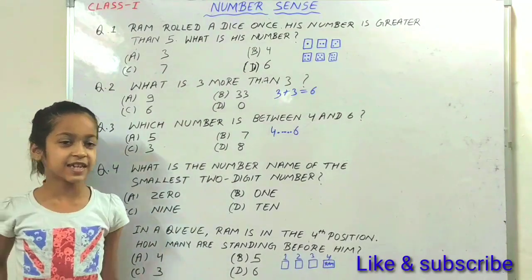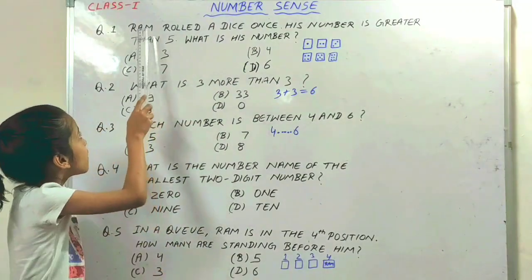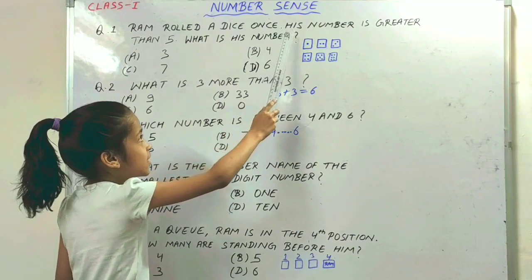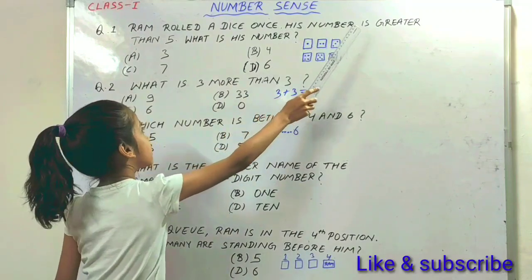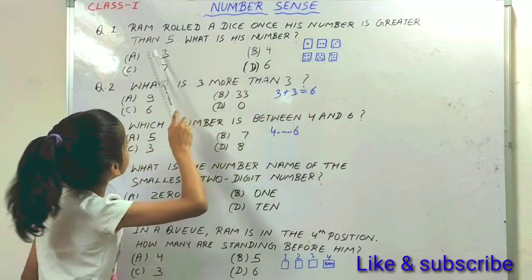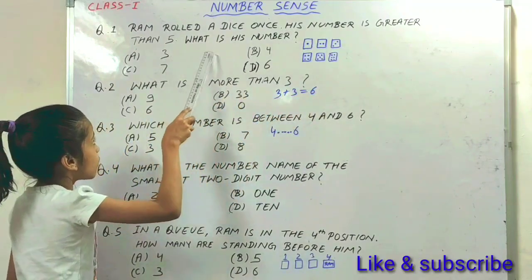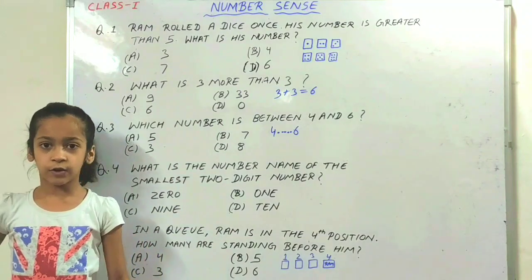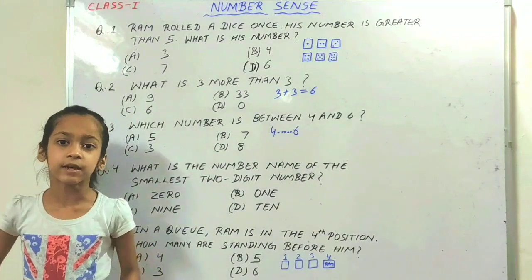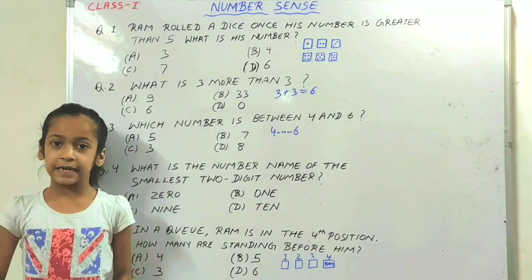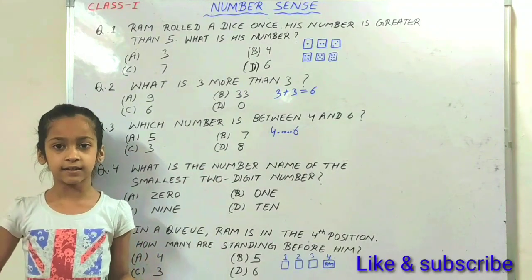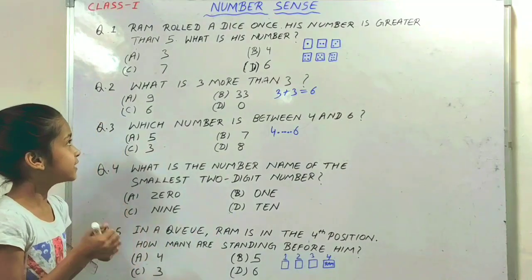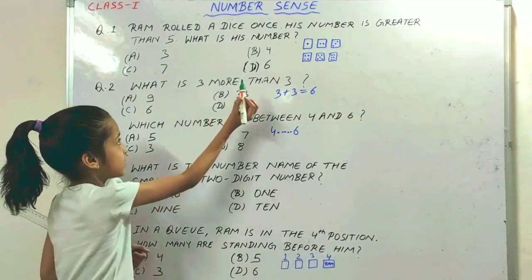The first question is: Jan rolled a dice once and his number is greater than 5. What is his number? After 5, 6 comes, and in the dice there are 6 numbers. So the answer is D, 6.